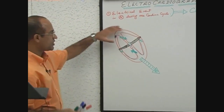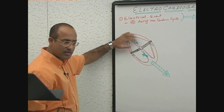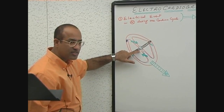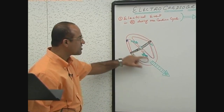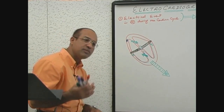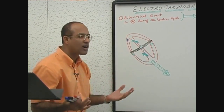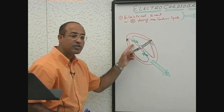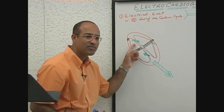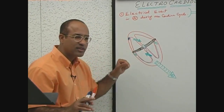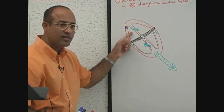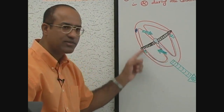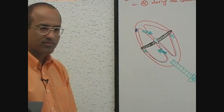Atrial depolarization is done by this vector. When the AV node is showing silence, then the ventricular depolarization process starts. At that very time, the atria is undergoing repolarization. So the repolarizing current in the atria is masked by the depolarizing activity in the ventricles.